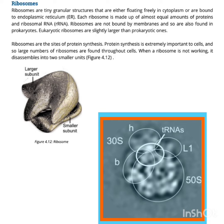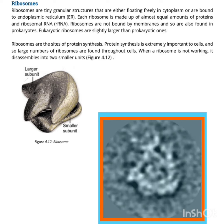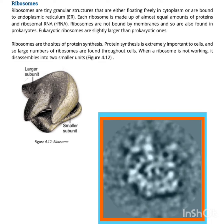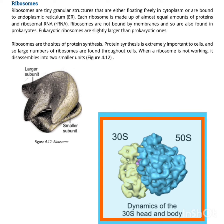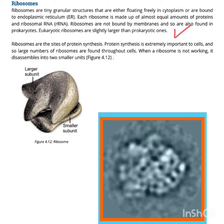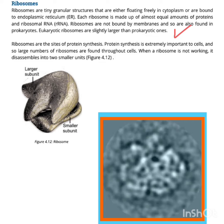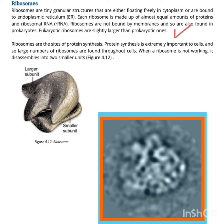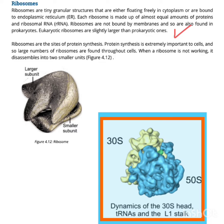Ribosomes are not bound by membranes, and so are also found in prokaryotes. Eukaryotic ribosomes are slightly larger than the prokaryotic ones.